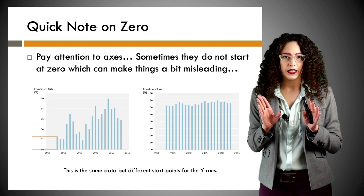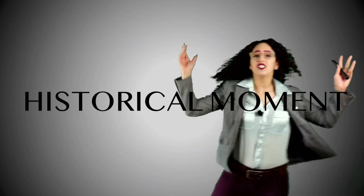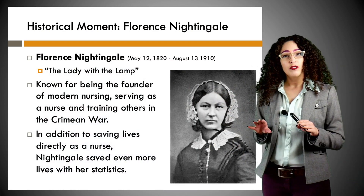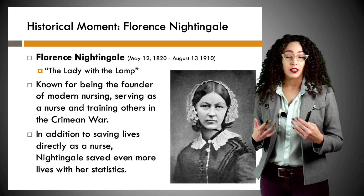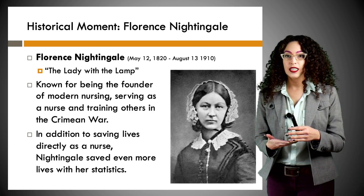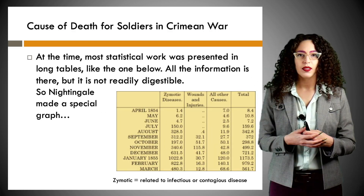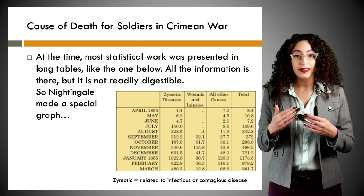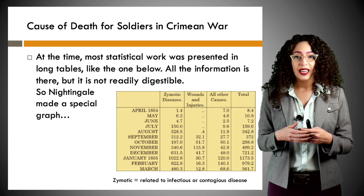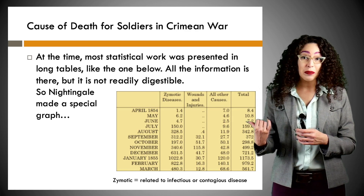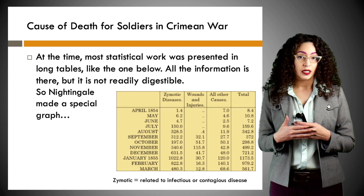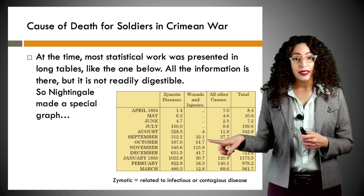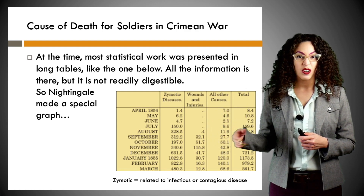Now we've looked at a lot of different graphs. I think we need to take a pause and have a historical moment. Our historical moment today: Florence Nightingale, also known as the lady with the lamp. She was known for being the founder of modern nursing, serving as a nurse and trainer of others in the Crimean War. In addition to saving lives directly as a nurse, Nightingale saved even more lives with her statistics. She amassed a lot of data during the Crimean War to figure out the main cause of death of most British soldiers. At the time, most statistical work was presented in long tables — all the information is there, it's just not quick to digest. So Nightingale decided to make a special graph to get all of this information across at just a glance. The zymetic diseases are preventable diseases due to infection or contagious diseases.